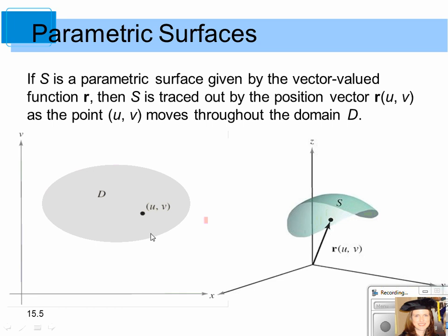This is a two-dimensional domain in terms of u and v, and every point in the domain corresponds to a point on the surface, where the terminal point of the vector r(u,v) is actually on the surface.